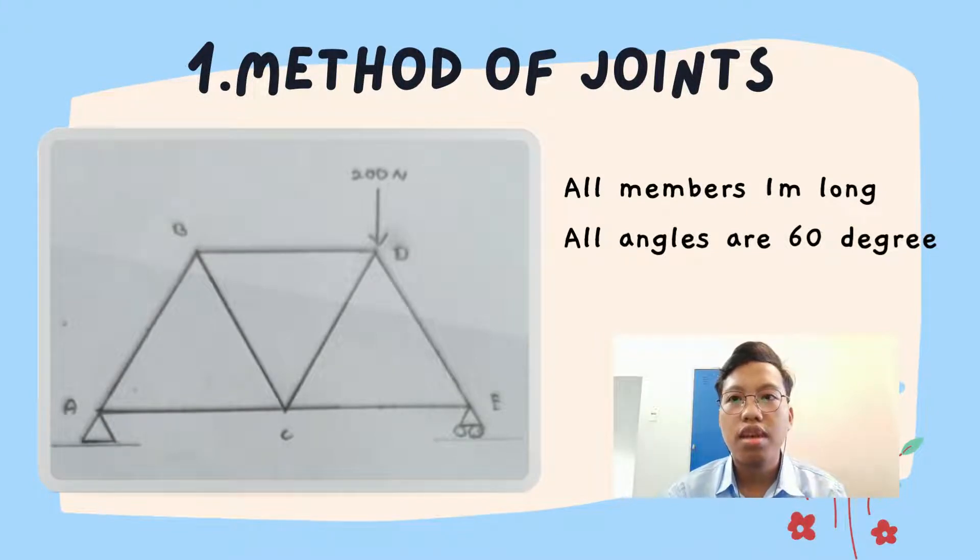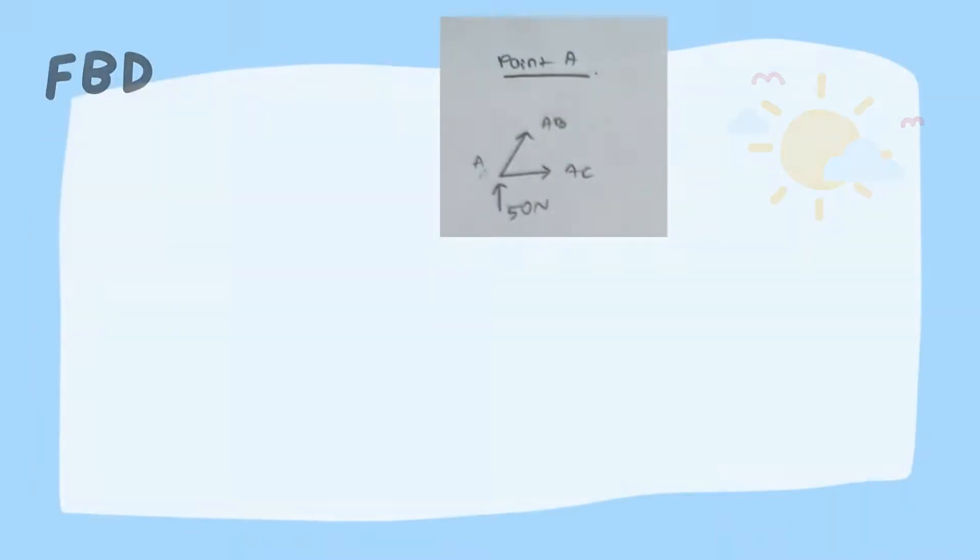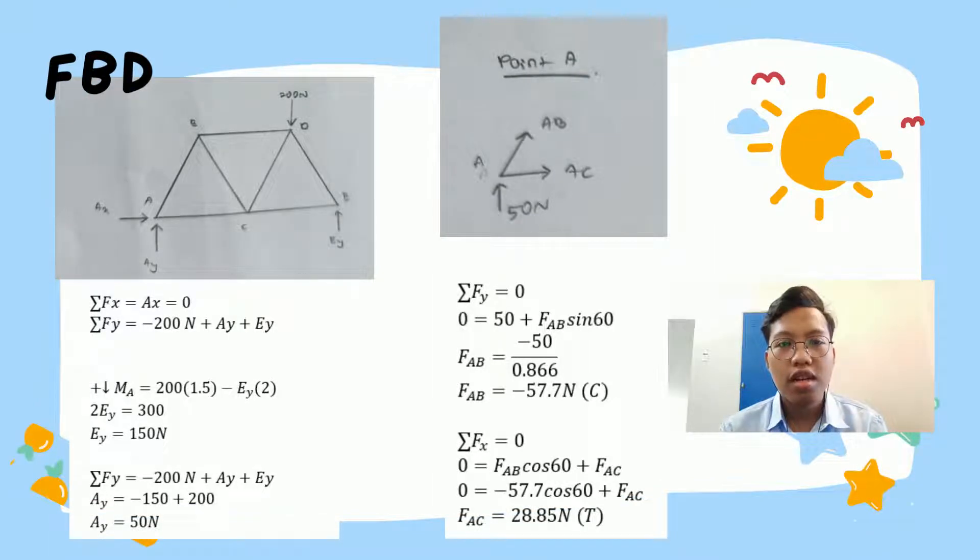So, the first calculation is method of joints. We have two factors: all members are 1 meter long and all angles are 60 degrees. We have one force which is 200 N at point D pointing downward.